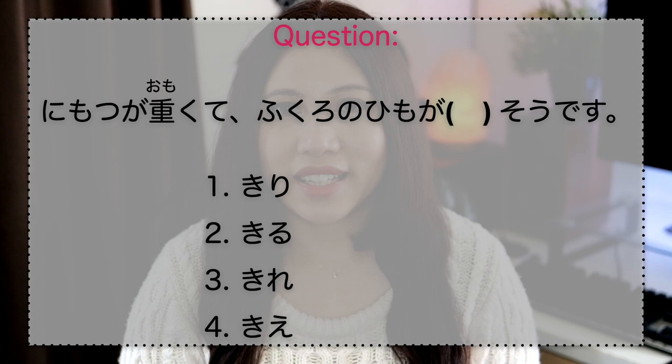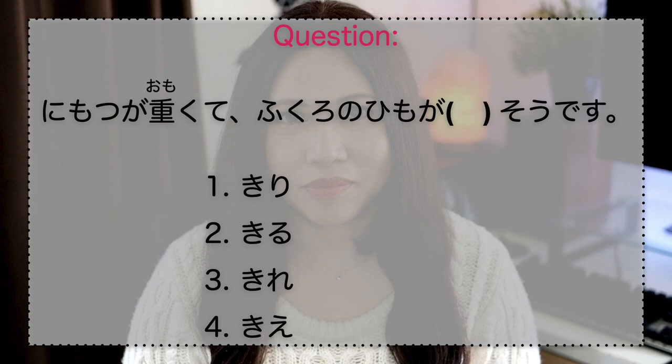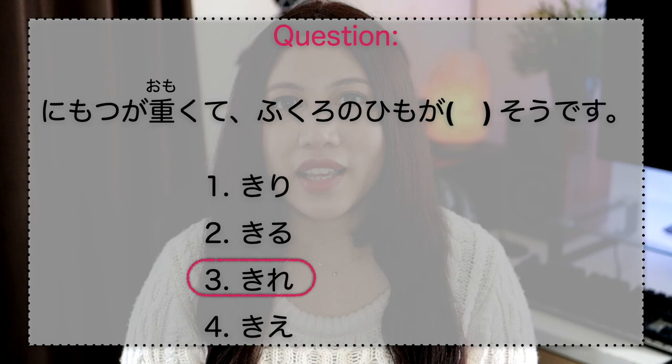Here is a quiz. Nimotsu ga omokute, fukuro no himo ga nani nani so desu. What is the answer? 1-ban: kiiri. 2-ban: kiiru. 3-ban: kirei. 4-ban: kire. Please choose your answer. The correct answer is 3-ban. Nimotsu ga omokute, fukuro no himo ga kire sou desu — the bag strap looks like it's about to break because the luggage is heavy.